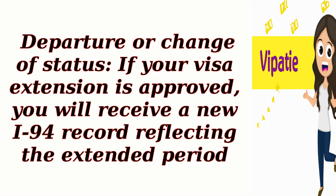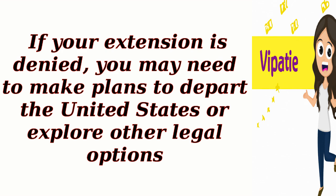Step 10: Departure or change of status. If your visa extension is approved, you will receive a new I-94 record reflecting the extended period. If your extension is denied, you may need to make plans to depart the United States or explore other legal options.